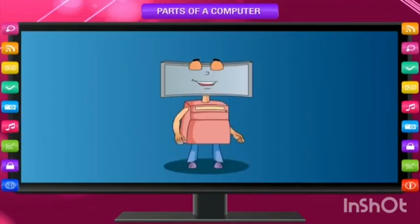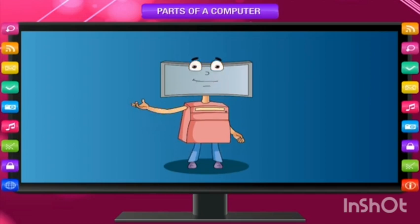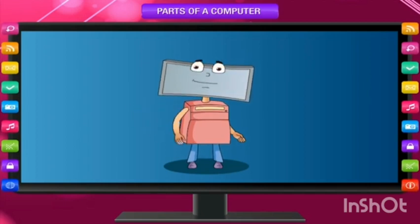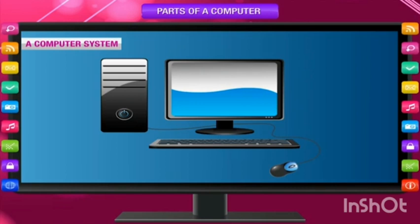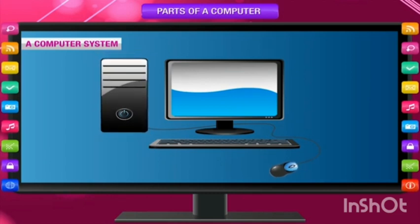Hi friends, I am here again. Today I will tell you about the parts of a computer, a computer system. The monitor, keyboard and mouse are connected to the CPU and together they form a computer system.